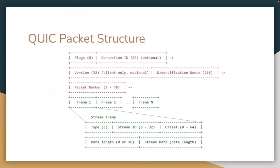It's also worth taking a look at the packet structure. With QUIC, every time we can encrypt something, we do. Here in green is encrypted, and in red is authenticated but not encrypted. The only reason some parts are left unencrypted is because we actually need that information to figure out where the packet is going or to encrypt and decrypt the packet.